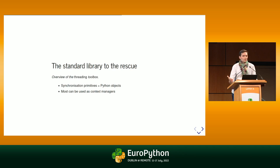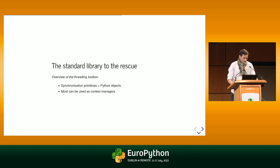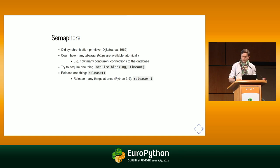What tools do we have in the Python standard library? We don't need anything external — everything is built in. The synchronization primitives are just Python objects, and most of them can be used as context managers for easy scoping. These are staples in computer science, not specific to Python — what's specific to Python is just the API. First we have semaphores, one of the oldest synchronization primitives, which count how many things there are in a pool in an atomic fashion. You can try to acquire something from the pool, and if there's nothing left, you'll block unless you have a timeout. You can then release from another thread to give access to more things.